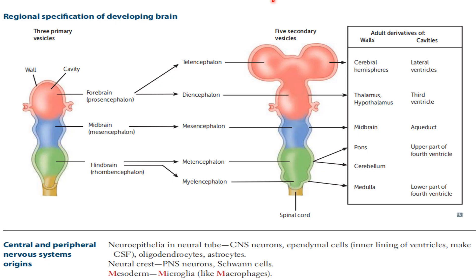Looking at the walls and their derivatives: telencephalon is going to develop into the cerebral hemispheres, and also the basal ganglia. Diencephalon is going to develop into the thalamus and hypothalamus, and importantly it also gives rise to the retina — this is commonly asked. So remember, the retina comes from the diencephalon.